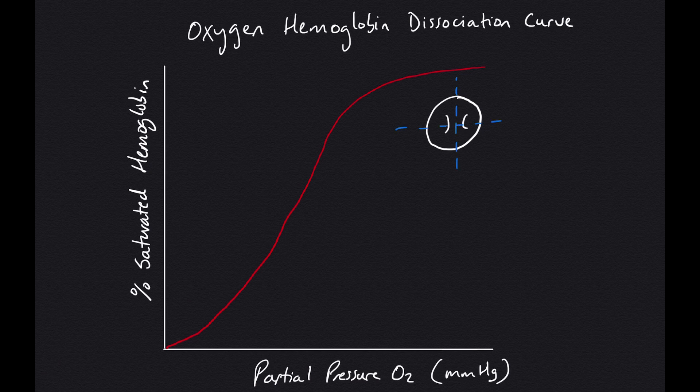You may be asking, why does this normal relationship look like a curve and not a straight line up to the left?